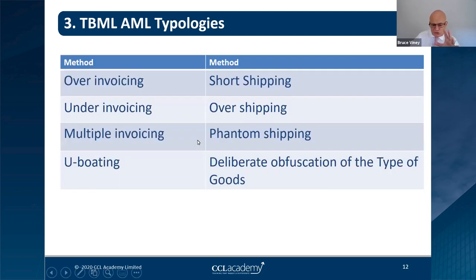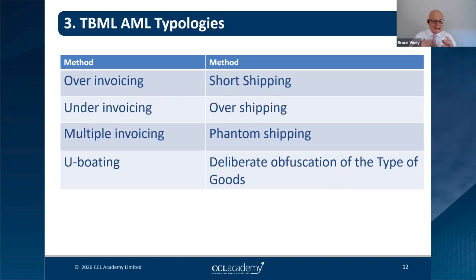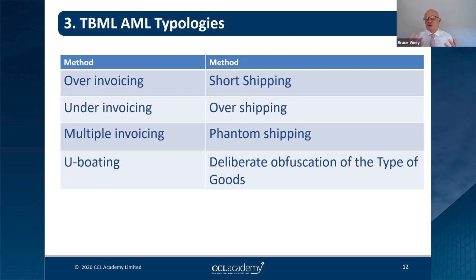Proliferation finance is linked to dual-use goods and is about providing finance for weapons of mass destruction. It is similarly hard to identify but very important — the FATF paper on this explains why it is considered so significant. Your organizations should each have their own lists of possible dual-use goods.